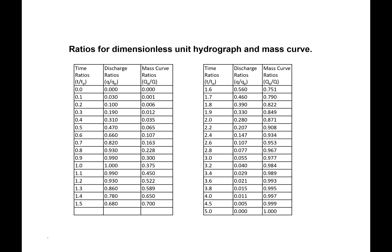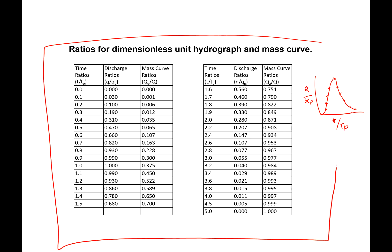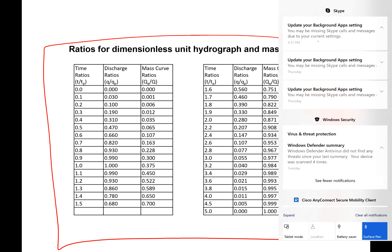The previous slide showed just the curve. The table here lists all the Q/Qp and t/tp values used to create that curve. When you want to use this method you don't just need the curve — you actually need the tabulated values. This table is standard and is published in the SCS report and many textbooks.